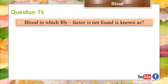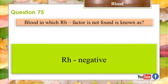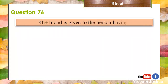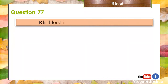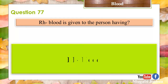Question 75: Blood in which Rhesus factor is not found is known as? Rhesus negative. Question 76: Rhesus positive blood is given to a person having? Rhesus positive blood. Question 77: Rhesus negative blood is given to a person having? Rhesus negative blood.